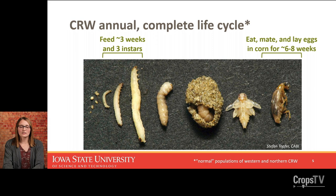Corn rootworm has an annual life cycle — it goes through one generation per year, meaning it goes from egg to adult one time every single year. Right now in January, they are overwintering as eggs in the soil. Those eggs will hatch usually starting in mid-May and continue through June. Once those eggs hatch, larvae will feed on corn roots in the soil for about three to four weeks depending on temperature, going through three instars, getting bigger and hungrier with every instar.